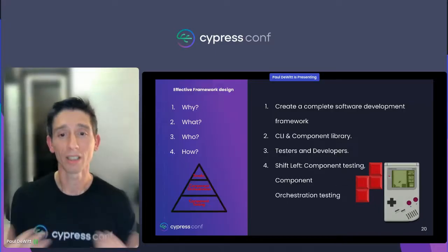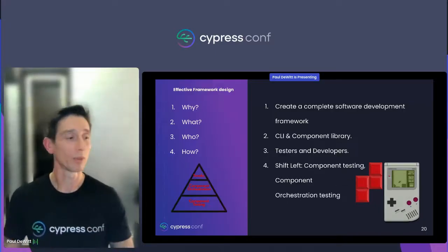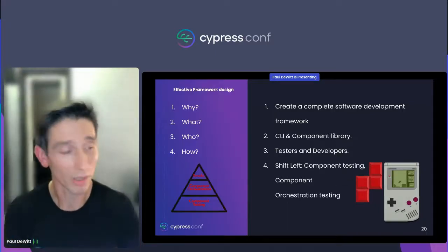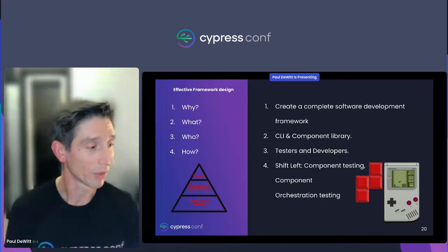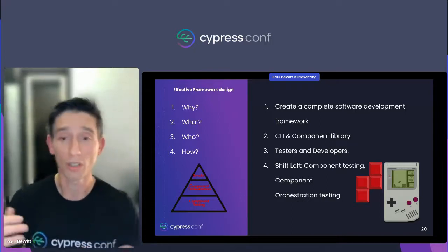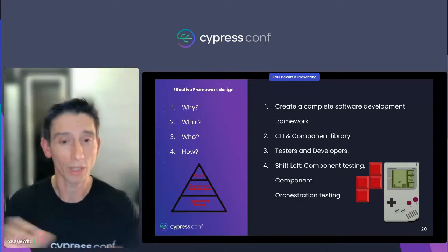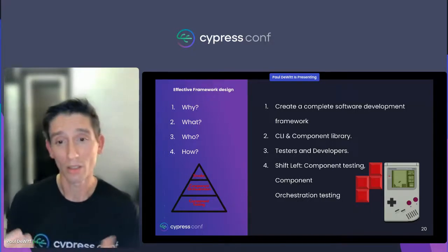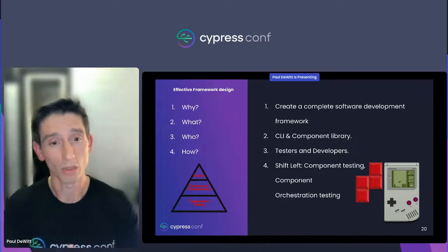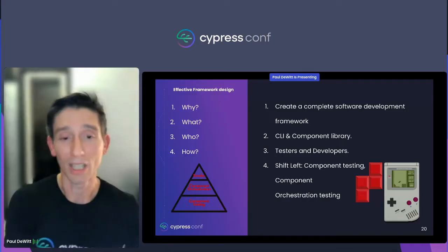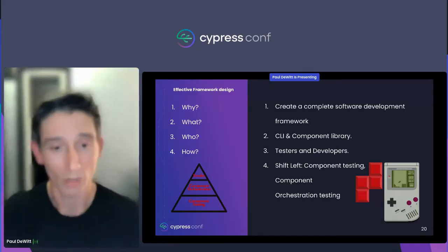In this example, we fully used all the layered pyramids: component testing, orchestration testing — sort of end-to-end but still with mock data, so more like integration — and the CLI was essentially a smoke test.